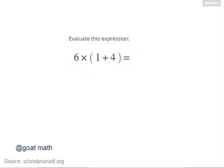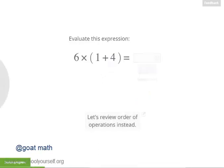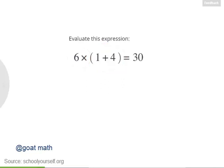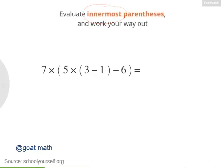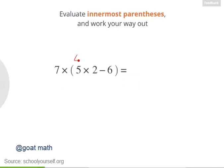Can you evaluate this expression: 6 times 1 plus 4, where 1 plus 4 is in parentheses? First you evaluate the 1 plus 4 in parentheses to get 5, and then multiplying by 6 gives you 30. Now take a look at this expression — there are two sets of parentheses, an inner pair and an outer pair. When you have more than one pair of parentheses, you should always evaluate the innermost pair first and then work your way out. We'll start with the inner parentheses: 3 minus 1 is 2. Then 5 times 2 is 10, minus 6 is 4, and 7 times 4 is 28.